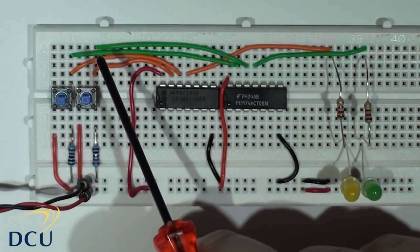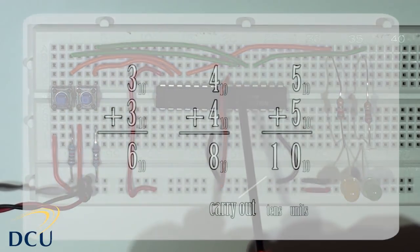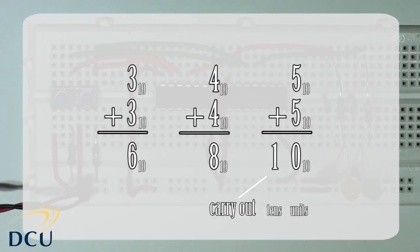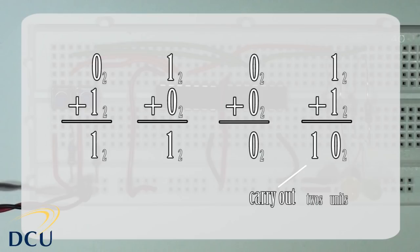First we have to look at addition. In decimal addition when we add numbers like 3 plus 3 we get 6. The subscript of 10 refers to base 10, or decimal. If we add 4 plus 4 we get 8, and most importantly 5 plus 5 equals 0 with a carry out of 1, which we read as 10. Binary addition is the same. We previously used plus to denote the OR operation; in this case I'm referring to addition with the plus sign, and we're using addition with base 2 numbers.